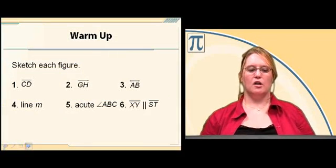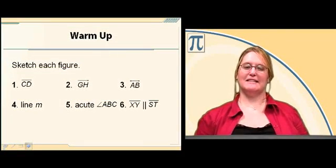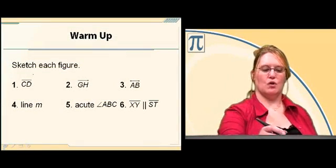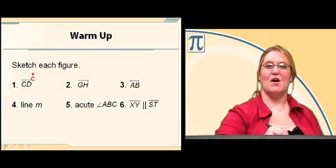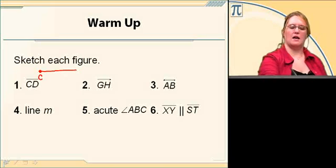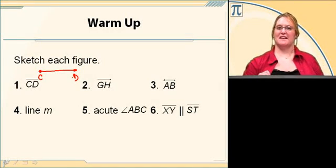We're going to look at sketching segment CD first. So we're going to first draw a point, label it C. From there, draw a line to another point, and then label it D, and there's segment CD.